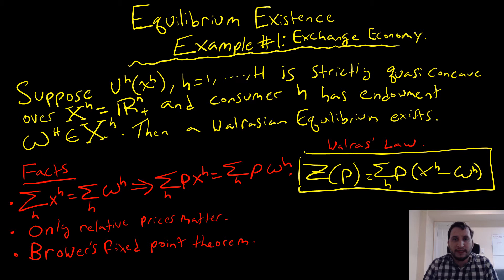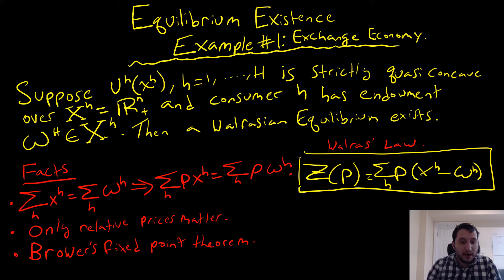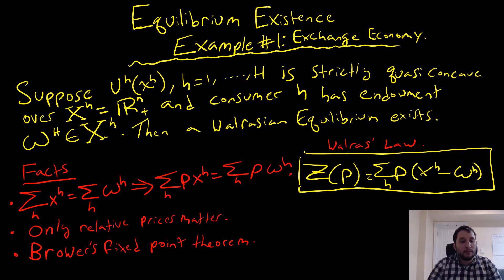Welcome to this video where we're going to be going through equilibrium existence proofs. This is the case for an exchange economy. Suppose that u_h, where we have each of many consumers, is a strictly quasi-concave function over our commodity space defined by an n-dimensional positive real number space, and consumer h has an endowment defined within our commodity space. Then a Walrasian equilibrium exists. This is the theorem — or proposition — that we go and prove.